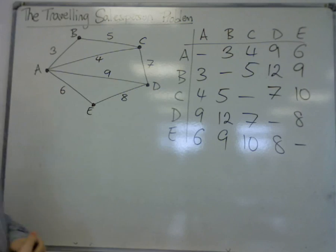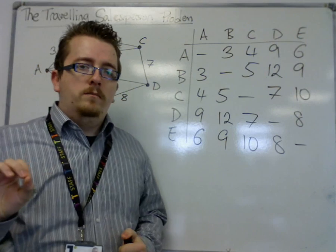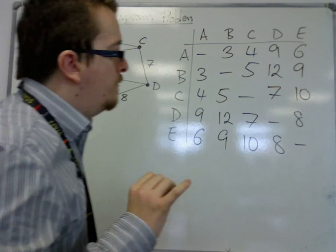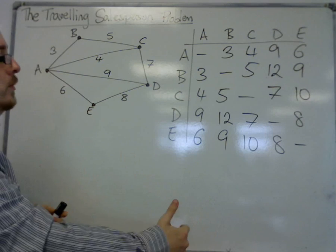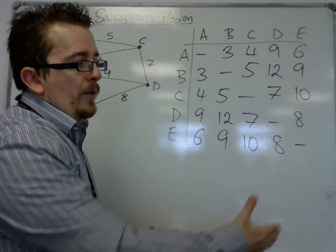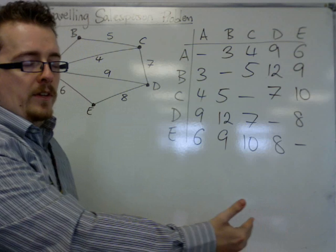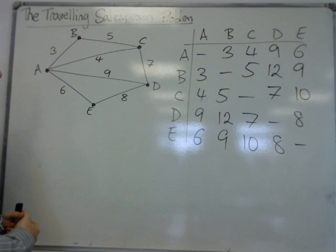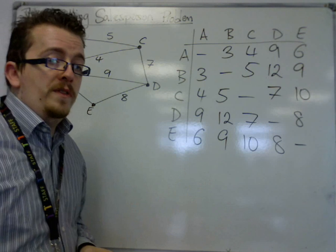So in some one mark questions, a very initial question is give an example of a Hamiltonian cycle in this situation, or give an example of a tour in this situation.